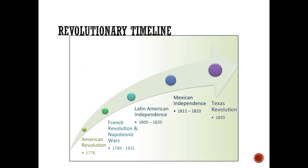When we look at the revolutionary timeline, a lot of revolutions in the modern period all date from the American Revolution. This is the first time in modern history that colonies revolted against their mother country, and it led and inspired other revolutions which all trace their origins to the ideology of the American Revolution. Texas' Revolution in 1835 was no exception.